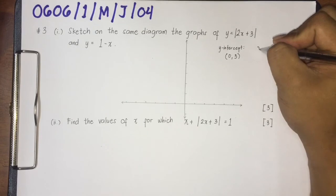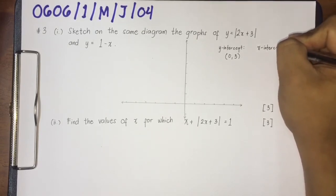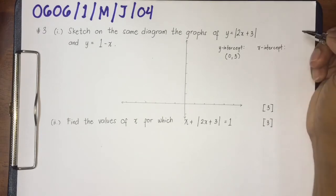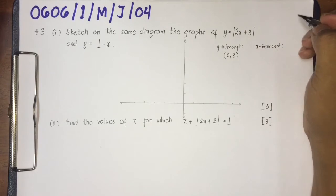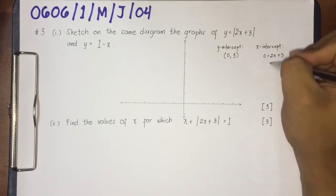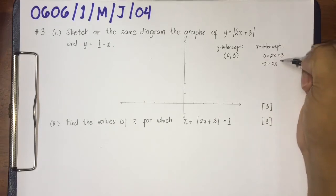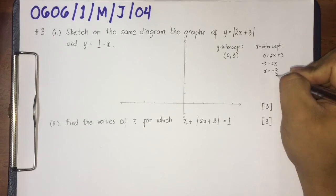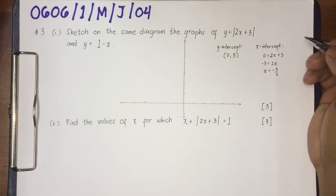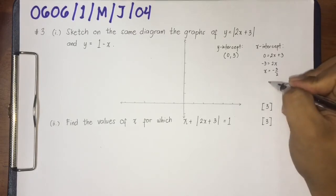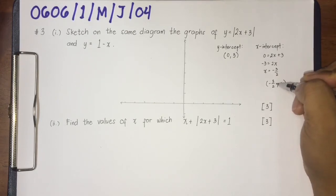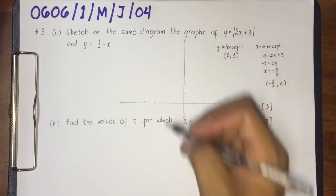Next, we are going to solve for the x-intercept. The x-intercept is found when you make y equal to 0 — that's a basic thing from your mathematics. So 0 equals 2x plus 3. Don't mind the modulus yet. It becomes negative 3 equals 2x, therefore x equals negative 3 over 2. So the x-intercept is written as the point (negative 3/2, 0), and remember negative 3 over 2 is negative 1.5.